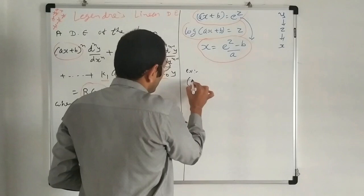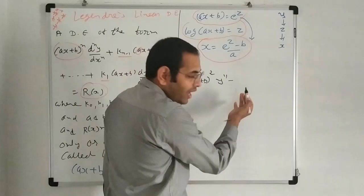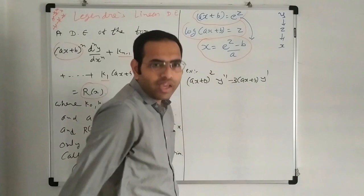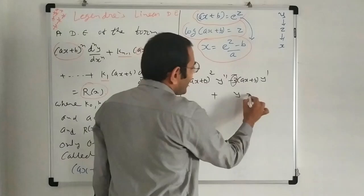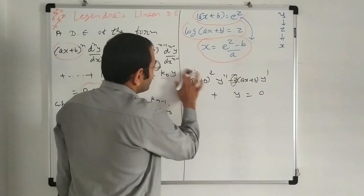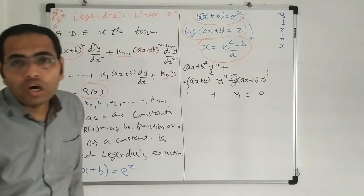For example, suppose we have (AX + B) times Y double dash — then we must require (AX + B) squared to also be present. Here the sign can be positive or negative. Then (AX + B) times Y dash requires (AX + B) to the first power. If AX + B appears with Y triple dash, then we must have the whole cube. For instance, if 3X + 2 appears with Y triple dash, we require the cube; with Y double dash, we require the whole square — where 3 is A and 2 is B, constant terms.